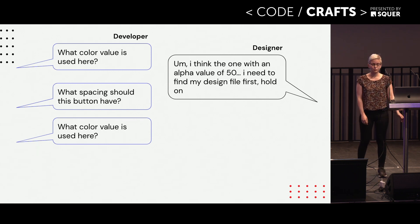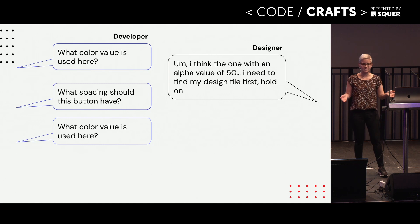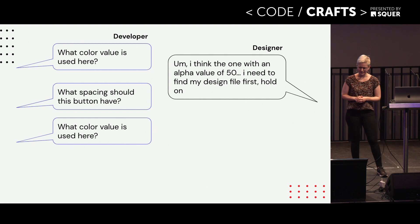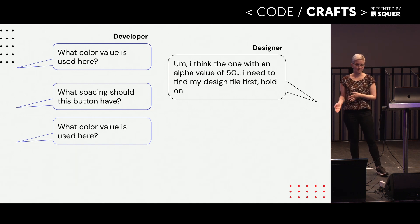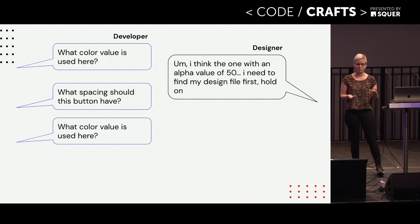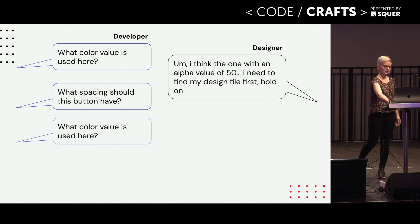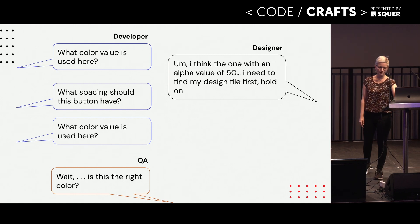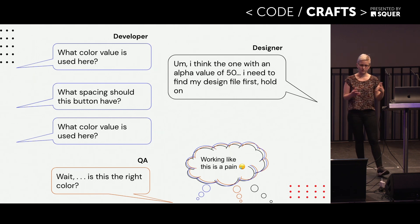A conversation like this happened really often in my career. I got a task to implement a new feature. Maybe I just get a screenshot or an outdated sketch file, and I'm starting. What color value do I need to use here? I got a response from the designer: yeah, I'm not sure, maybe the one with the alpha value of 50, but I need to check that first. While I'm waiting, I stumble across the next problem. What spacing do I need to use here? And while we are discussing, my colleague comes around with the color question again. After all this back and forth, and we think we finally fixed everything and everything is done, QA comes along and asks: hey, are you guys sure this is the right color? At the end, this leaves everybody really frustrated and nobody enjoys working like this.